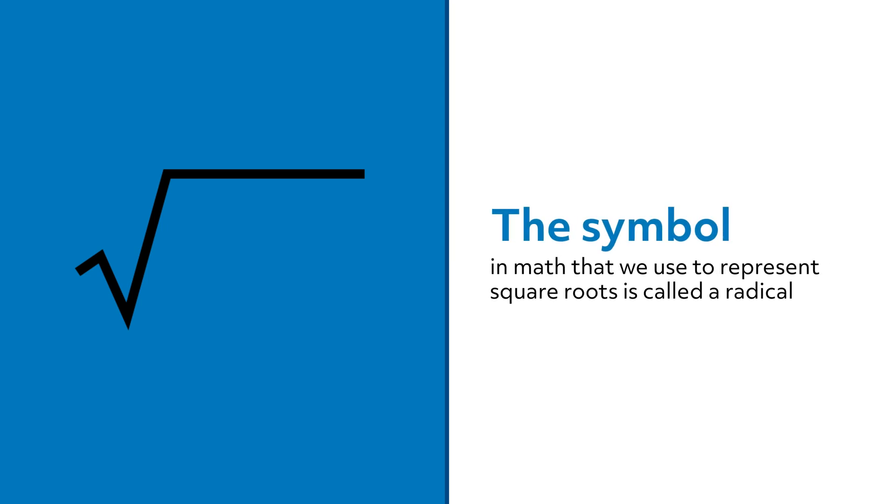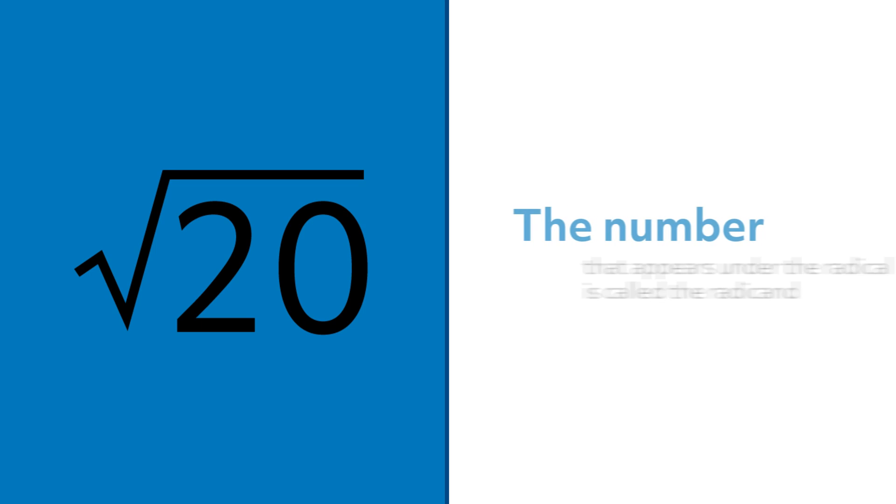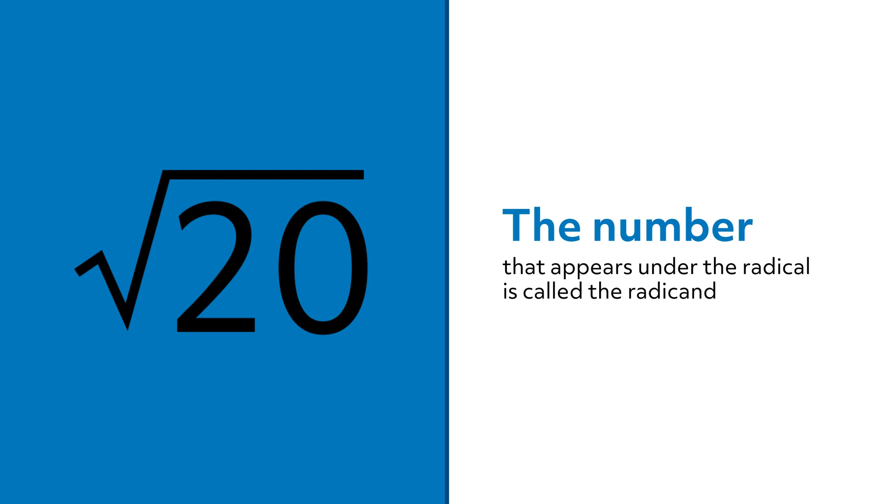The symbol in math that we use to represent square roots is called a radical, and it looks like this. The number that appears under the radical is called the radicand. For example, in this expression, which we read as the square root of 20, 20 is the radicand.